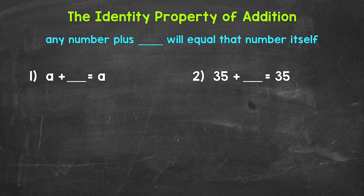When it comes to the identity property, think of the word itself. Basically, we need to think: how do we get something to equal itself? The identity property is actually very simple, but it's important to be familiar with because it applies to everything from basic math facts, to algebraic equations and expressions, to whatever else the case may be.